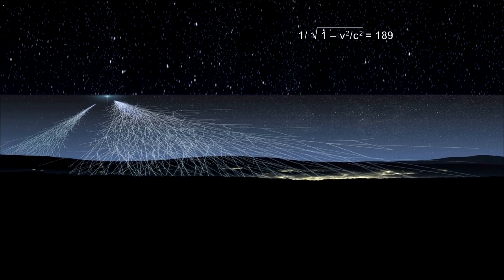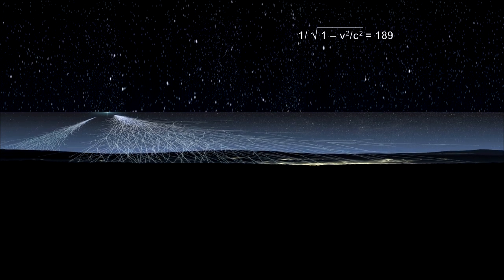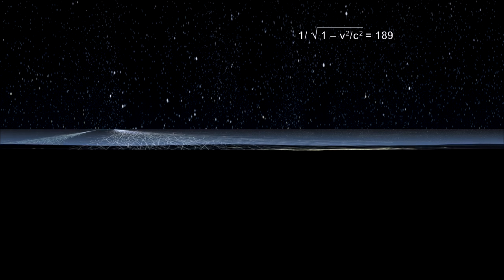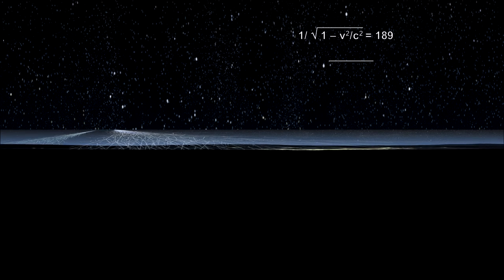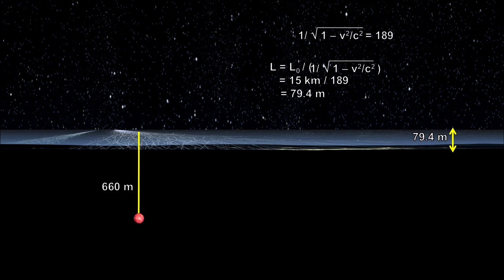This is where space contraction comes in. The 15 kilometers of atmosphere is shrunk. For the muon, the distance to the surface is only 79.4 meters. Most of them will reach it in 2.2 microseconds.